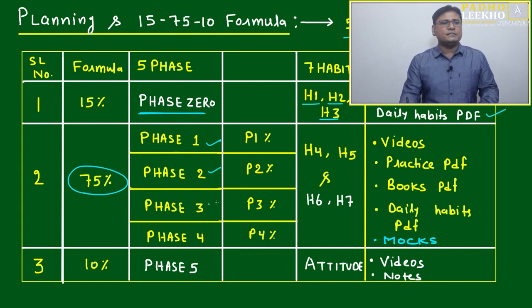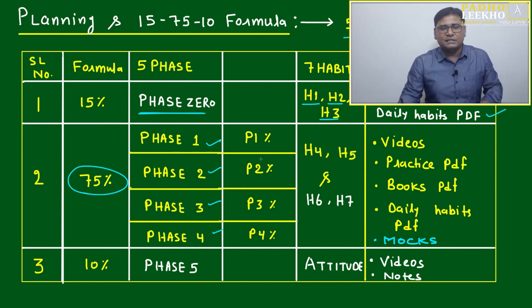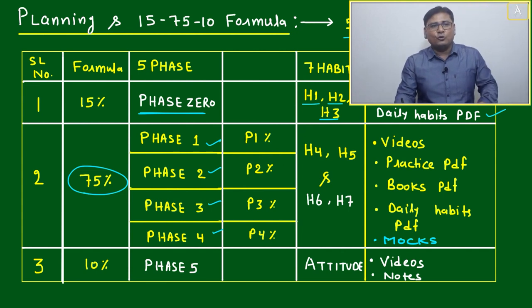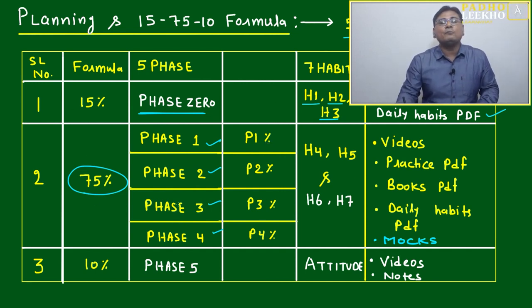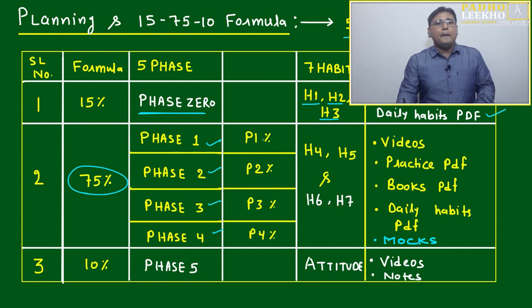Phase one, phase two, phase three, phase four—everywhere this 75% will divide into P1%, P2%, P3%, P4%. It will not be equal. If you want, you can make one DI caselet based on this table. Anybody interested can think after this session, otherwise I will guide you. Any information you get, try to make caselets based on this information. We can frame one good standard DI caselet.